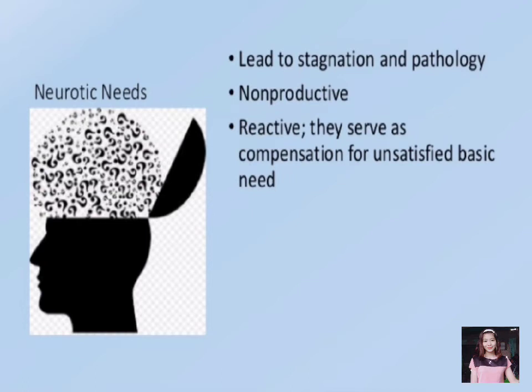The third category is neurotic needs, which lead to stagnation and pathology. They are non-productive and reactive, and serve as compensation for unsatisfied basic needs. While the satisfaction of cognitive and aesthetic needs is basic to one's physical and psychological health — and their frustration leads to some level of illness — neurotic needs lead only to stagnation and pathology. In psychoanalytic theory, they are an excessive drive or demand that may arise out of strategies individuals use to defend themselves against basic anxiety. When an individual's personality is dominated by a few neurotic needs, he or she may exhibit neurotic trends.